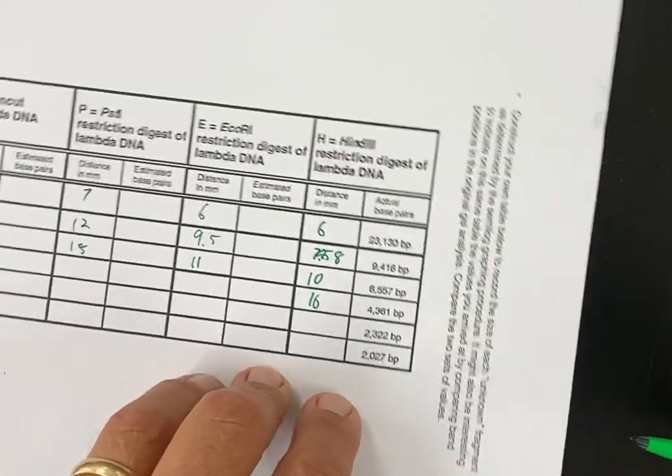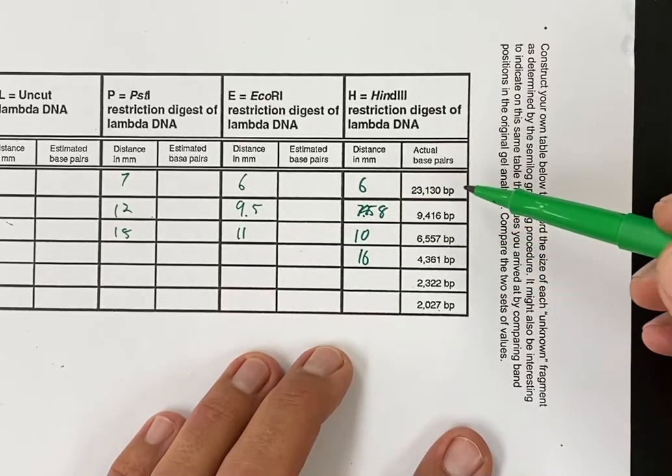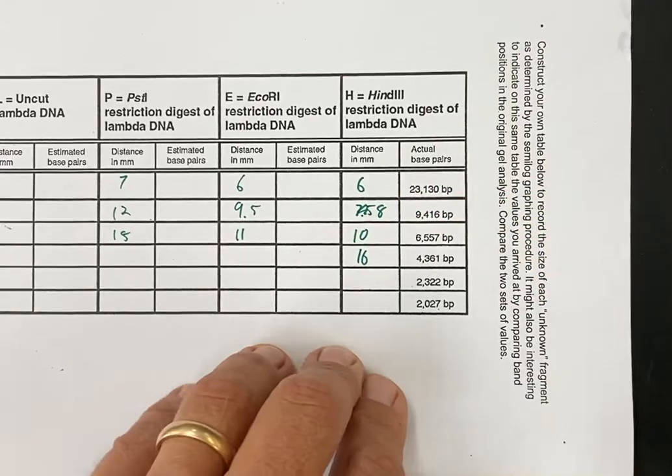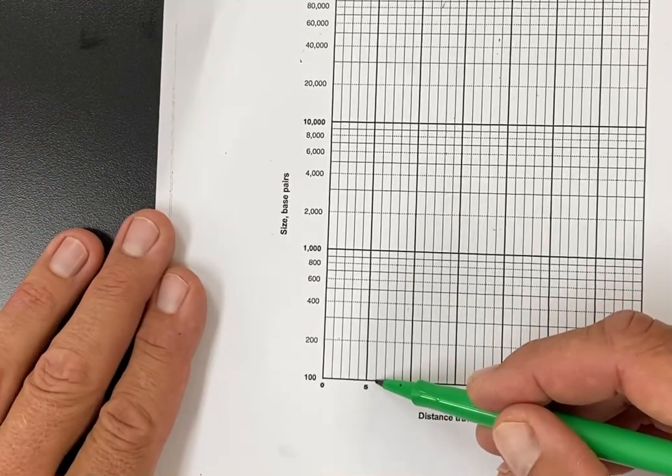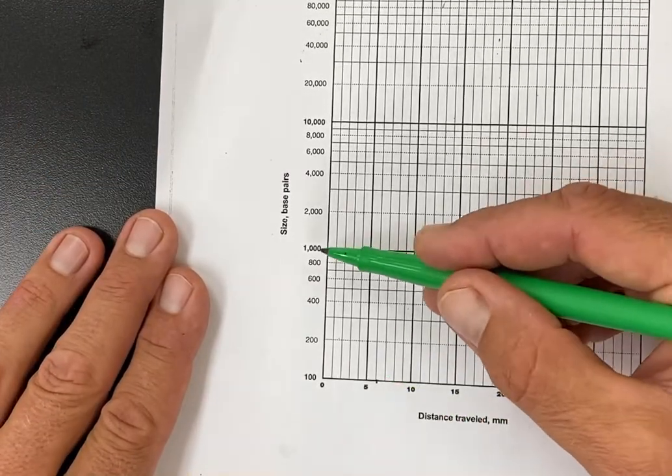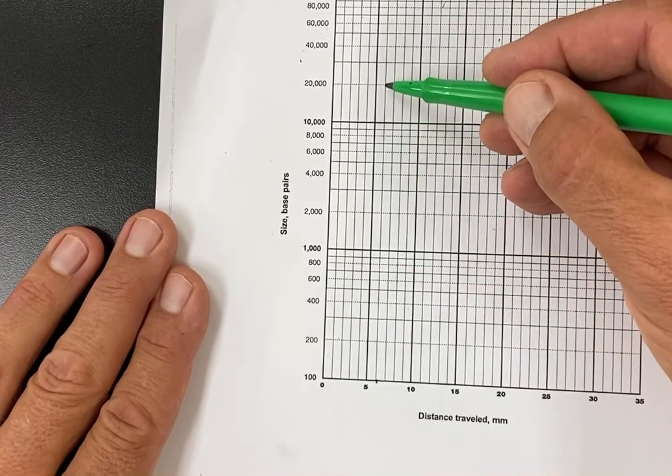So my first band was at 6 millimeters and about 23,000 base pairs. So I'm going to come over here and find 6 millimeters right here. I've got 1,000, 10,000, there's 20,000, that's 30,000, so 23,000 would be a point somewhere around here.